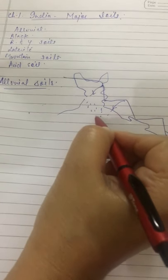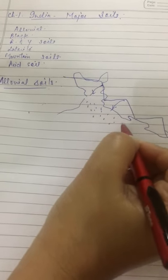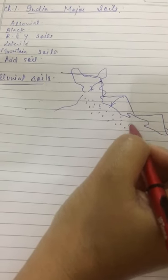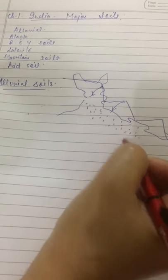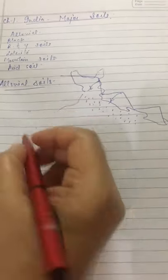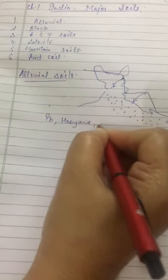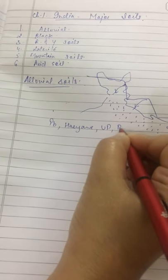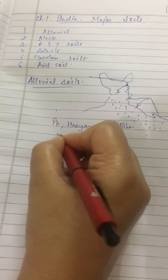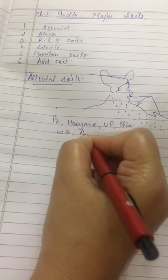And the rivers which are coming from the Himalayan Mountains deposits the Alluvium in this area. And this Alluvium is called the Alluvial Soil. This is the most fertile soil of the world found in Punjab, found in Haryana, found in Uttar Pradesh, Bihar, West Bengal and Assam.